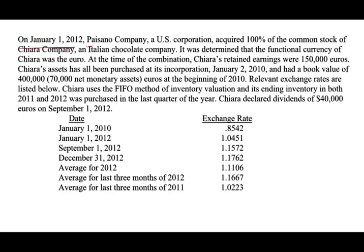On January 1st, 2012, P, a U.S. company, acquired 100% of an Italian chocolate company. It was determined that the functional currency is the euro. At the time of the combination, the Italian company's retained earnings was 150,000 euros — this is the beginning retained earnings. The Italian company was purchased at its incorporation, January 12th, 2010, and had a book value of 400,000 with 70,000 in non-monetary assets at the beginning of 2010.